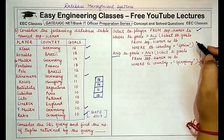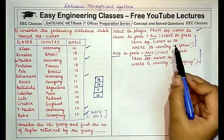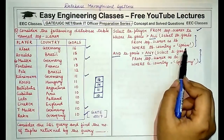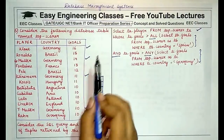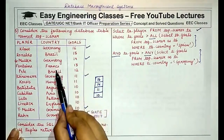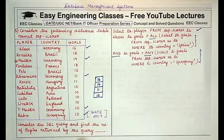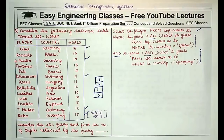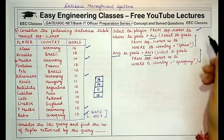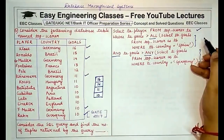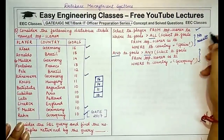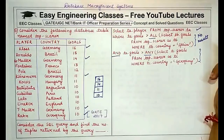Now coming to the inner query — the second level — which states: select goals from top scorer where country is equal to Spain. We have to find rows where country equals Spain and select the goals. There is no country listing players of Spain, no row listing players and goals from Spain. So this query becomes null and void — it gives no result; you get a null table from this query.